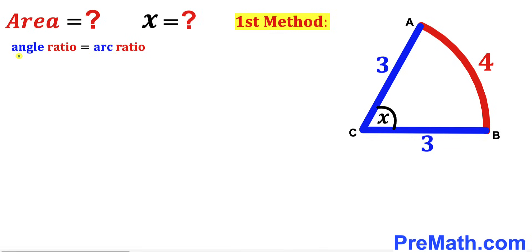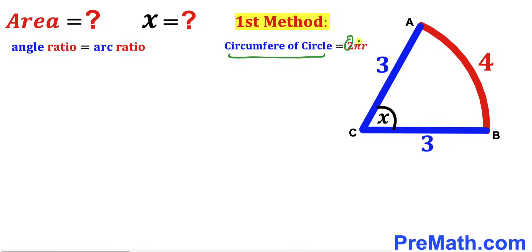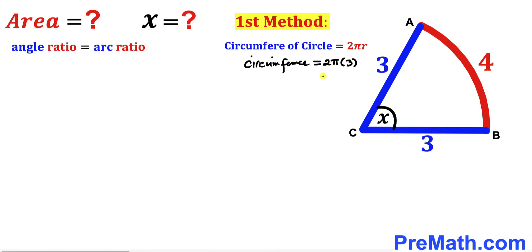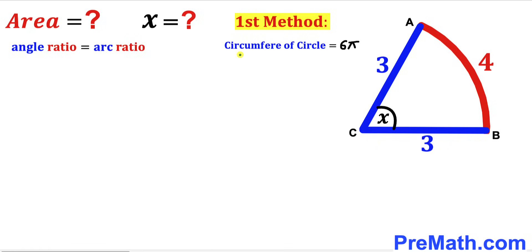We are going to compare this sector with the full circle using this proportion: the angle ratio is equal to the arc ratio. Recall that the circumference of a circle equals 2πr. In our case, radius r is 3 units, so the circumference is 2π × 3 = 6π.